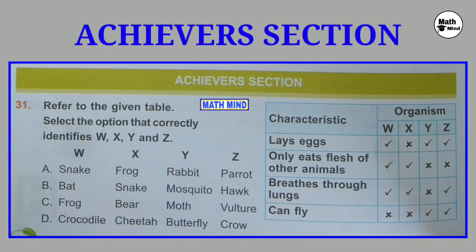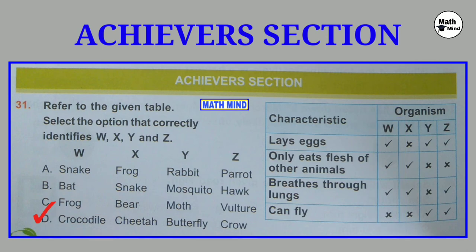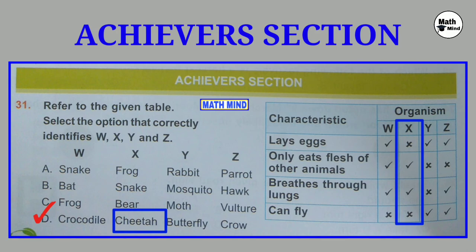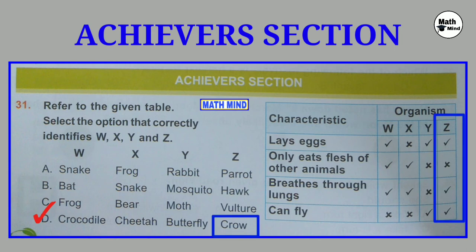Achiever section. Question number 31: Refer to the given table. Select the option that correctly identifies W, X, Y and Z. Option D is correct. W is crocodile — eats flesh of other animals, breathes through lungs and cannot fly. X is cheetah — eats flesh of other animals, breathes through lungs and cannot fly. Y is butterfly — cannot breathe through lungs and does not eat flesh of other animals. Z is crow — breathes through lungs and can fly, and eats both flesh and grains. So option D is correct.